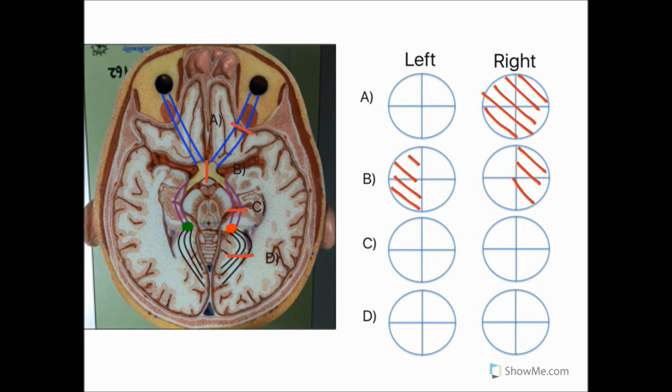Next we have a lesion in the right optic tract. In this case we would get damage to the fibres that have originated from the temporal side of the right retina and the nasal side of the left retina, causing a loss of vision in the left side of the visual field of both eyes. And this condition is known as left homonymous hemianopia. Homonymous meaning the same in both eyes and hemianopia meaning loss of half the visual field.